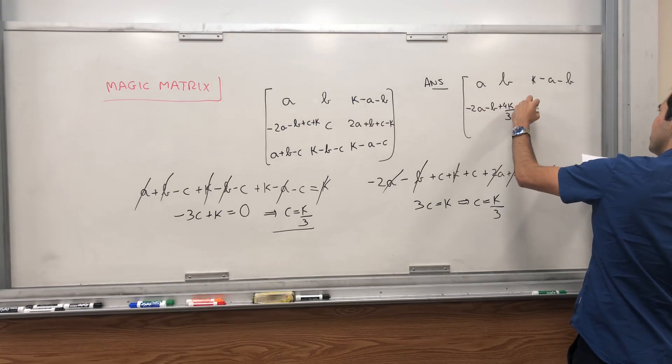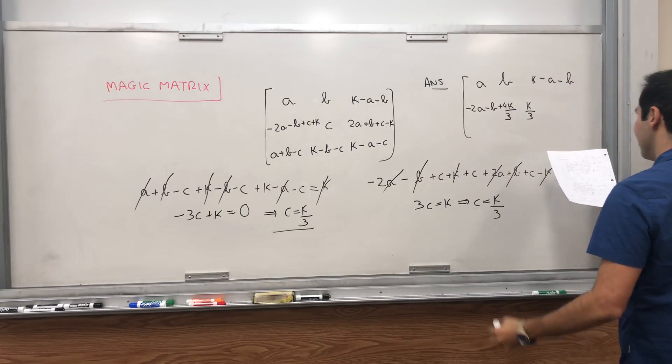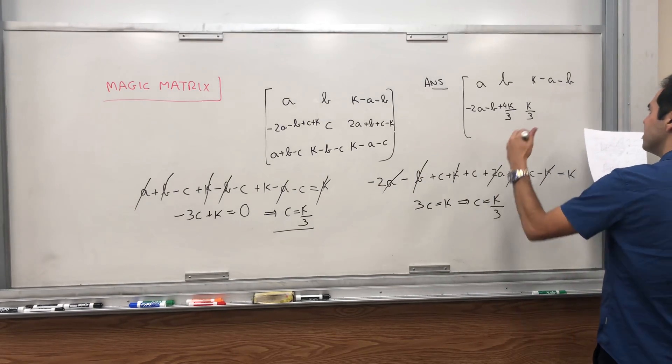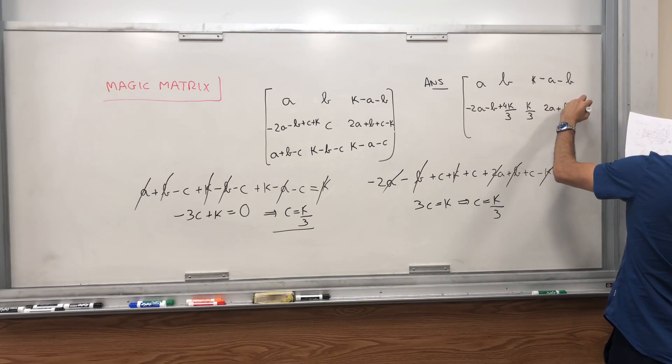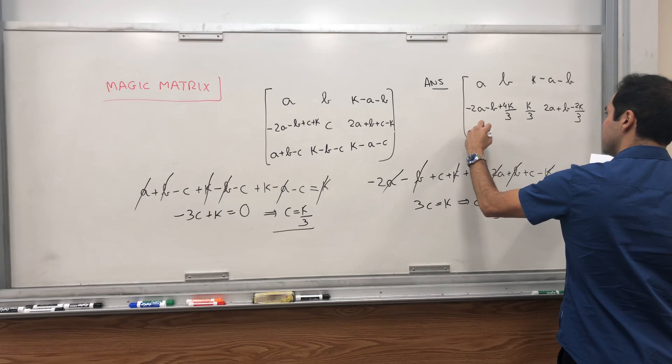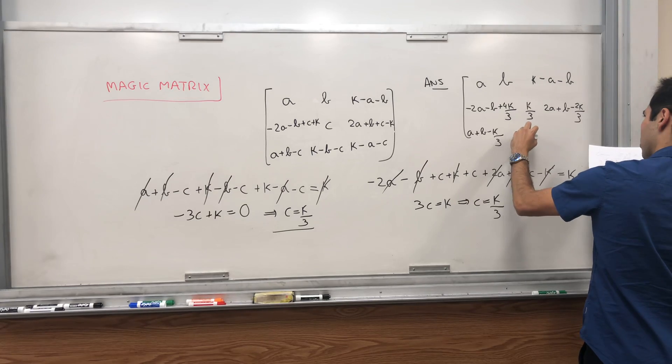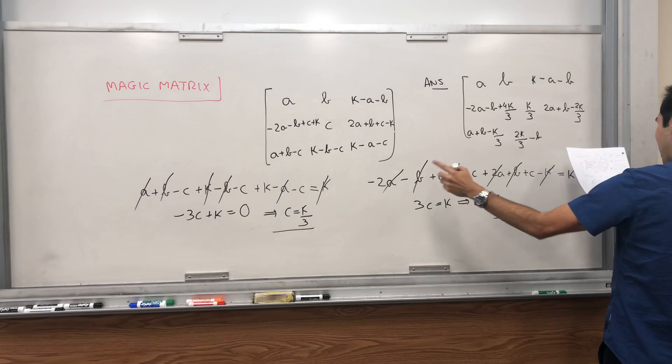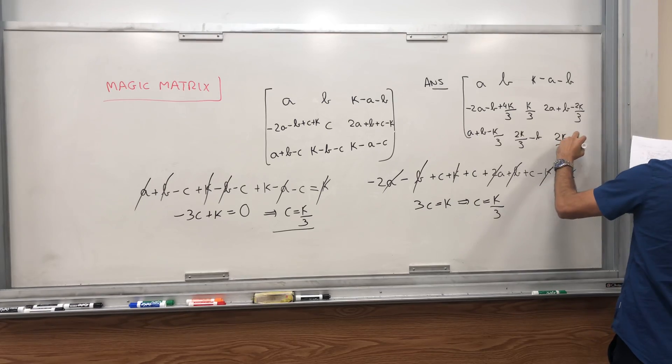Okay, then c which is k over 3, and then 2a plus b minus k - minus k becomes minus 2k over 3, so 2a plus b minus 2k over 3. And then a plus b minus k over 3, and then 2k minus k minus c is 2k over 3, and then k minus a minus c is 2k over 3 minus a.